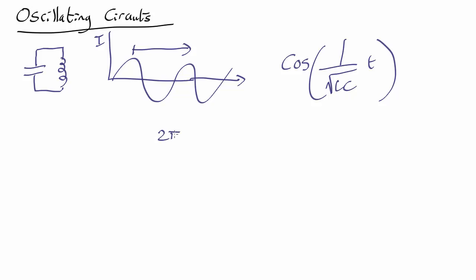So we have 2π equals 1/√LC times the time. The time needed for one complete cycle is just 2π√LC, and the frequency—the number of cycles per second—is just 1 over the time per cycle, so it equals 1/(2π√LC).